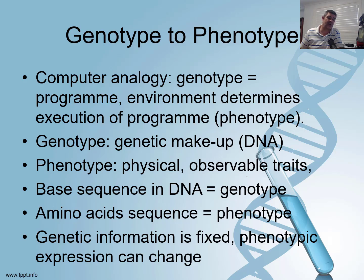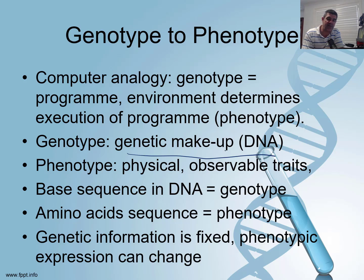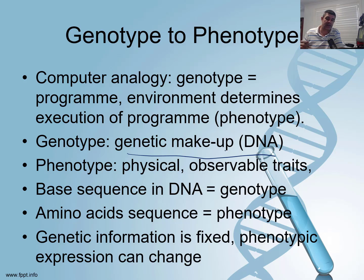There are programs that run in the background and programs chosen by the operator — that's the analogy, and remember, analogies are never perfect. The information is all there, but there are certain triggers for when certain programs are actually going to run. The genotype is the genetic makeup — the actual sequence of bases in the DNA. The phenotype is those physical observable traits actually being produced, including physical appearance such as flower or leaf colour, height of plants or people, hair colour, and eye colour. But the phenotype is also the specific sequence of amino acids present in the construction of a polypeptide.